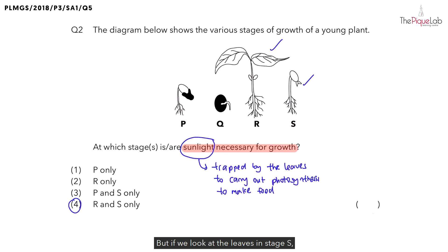But if we look at the leaves in stage S, you can see that they are quite tiny. Which means, have the true leaves fully developed? No. So, let's write that down, that the true leaves are not fully developed.